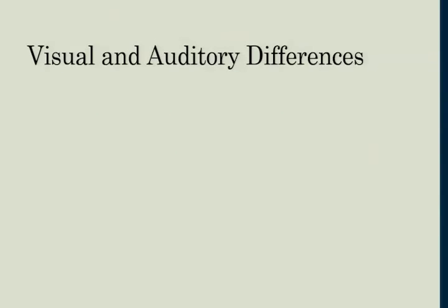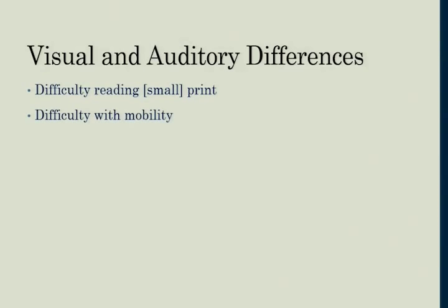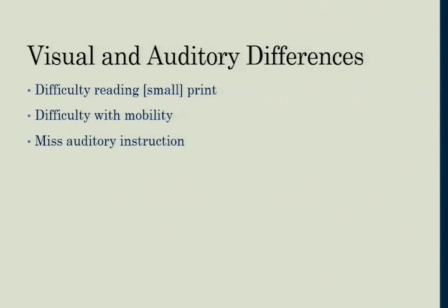Here are some things I've come across - visual and auditory differences. In broad strokes, students who have a temporary or permanent vision or hearing loss may exhibit characteristics in the classroom like difficulty with reading print, certain fonts, or small print; difficulty with mobility in the space; missing auditory instruction; missing all or part of class discussion or peers' contributions; and instances of miscommunication where they thought you said to do one thing and you said the opposite.